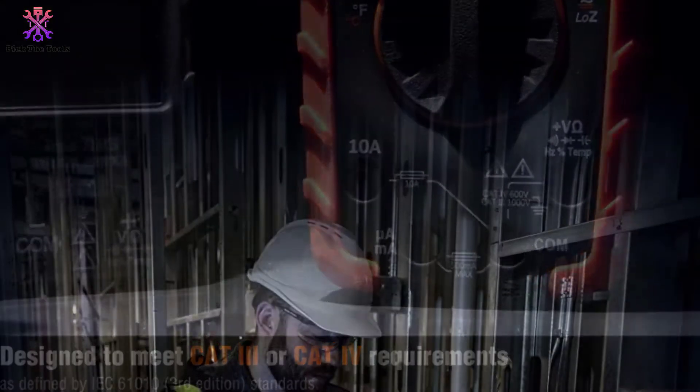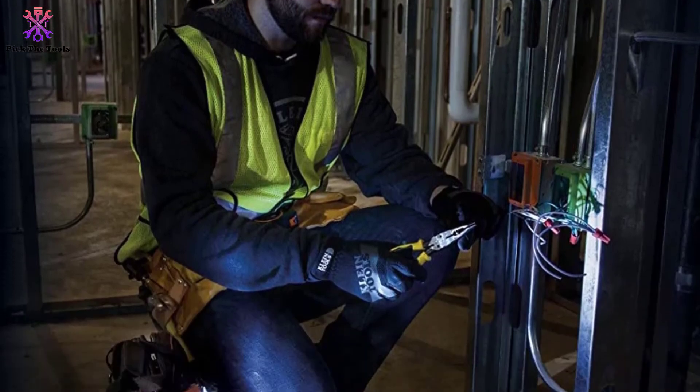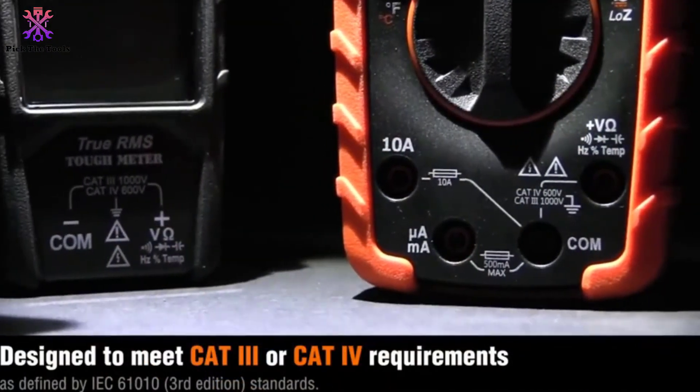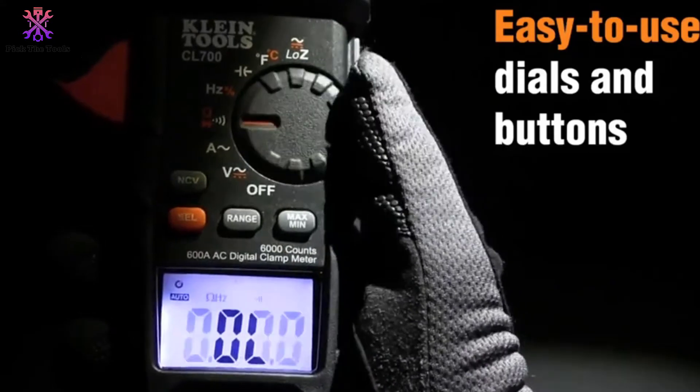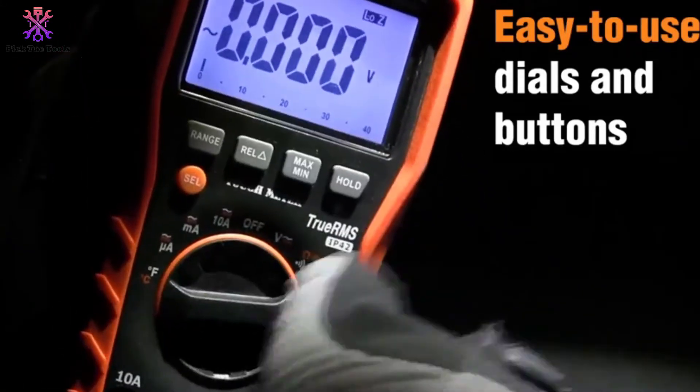This True RMS measurement with auto-ranging clamp meter is a complete package that can check diodes and measure both AC-DC and voltage, capacitance, temperature, resistance, and frequency.